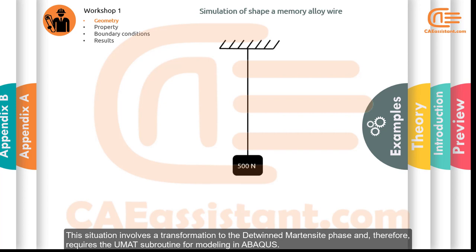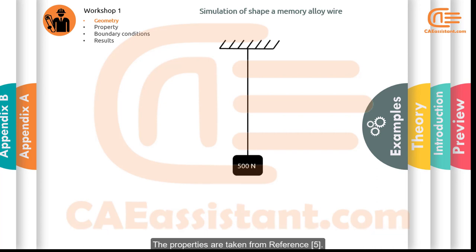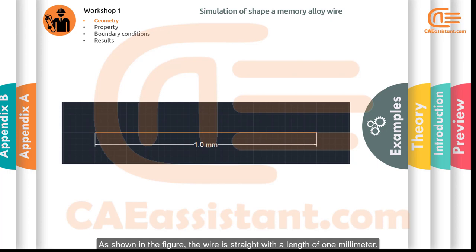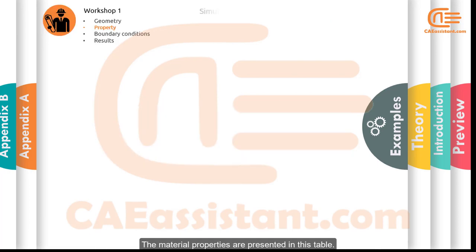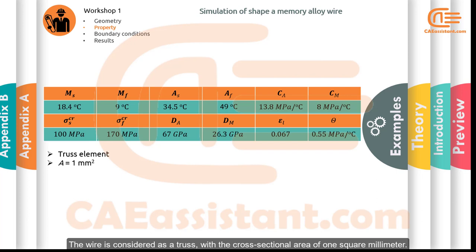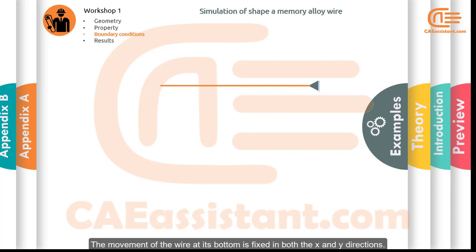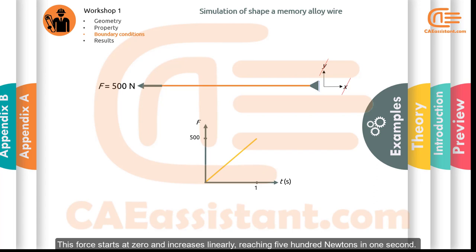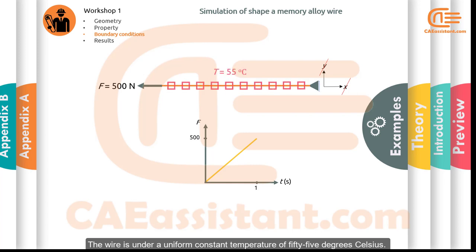The problem includes an SMA wire stretched under a concentrated force. This situation involves a transformation to the detwinned martensite phase and therefore requires the UMAT subroutine for modeling in Abaqus. The wire is straight with a length of 1 mm and a cross-sectional area of 1 mm². The bottom of the wire is fixed in both the x and y directions. A force is applied along the wire direction, starting at zero and increasing linearly to 500 N in one second. The wire is under a uniform constant temperature of 55°C.